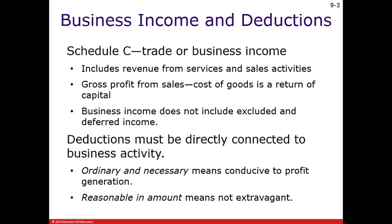As far as expense deductions are concerned — we talked about this in Chapter 6 — any expenses you deduct from income must be directly connected to the business activity. For instance, you can't deduct groceries if they're for personal benefit. The expense must be related to the business activity, and it must be ordinary, necessary, and reasonable.